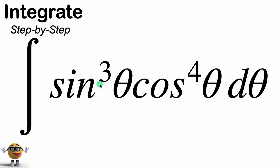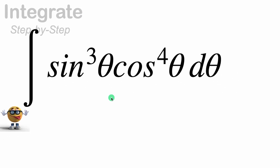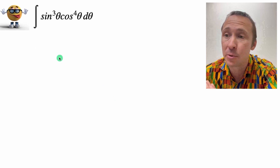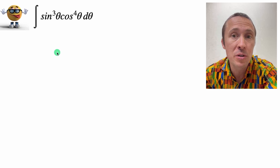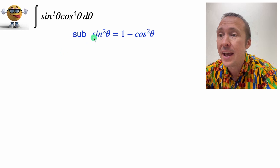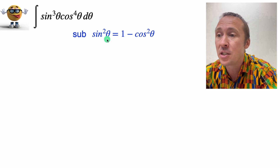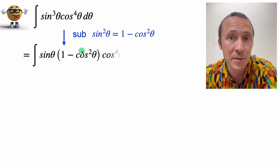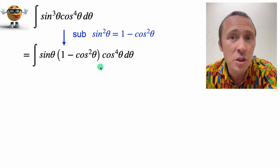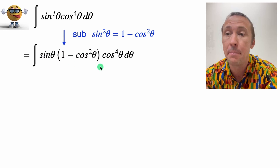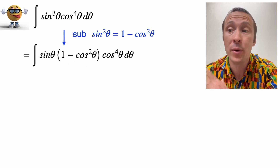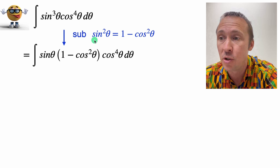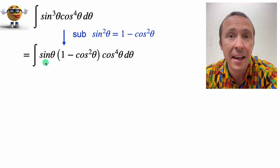My friends, we're going to integrate sine cubed theta times cos to the fourth theta. We're going to do two substitutions. The first one is with sine squared theta equals one minus cos squared theta, so we'll substitute that in here. And this looks more complicated, but it's not. The reason we did this substitution was so that we'd have this leftover sine theta.